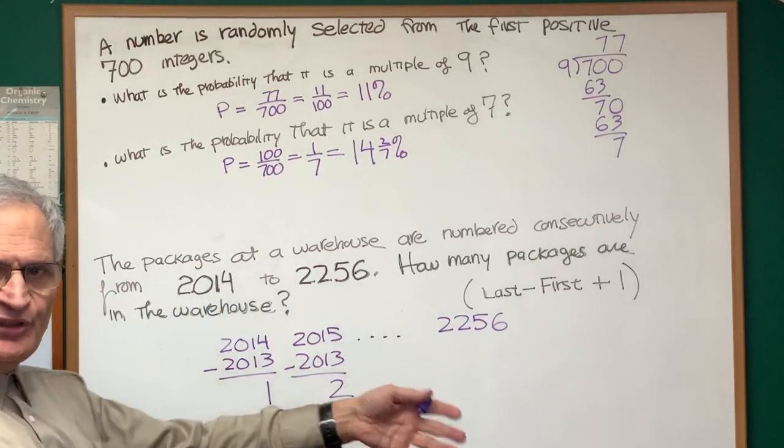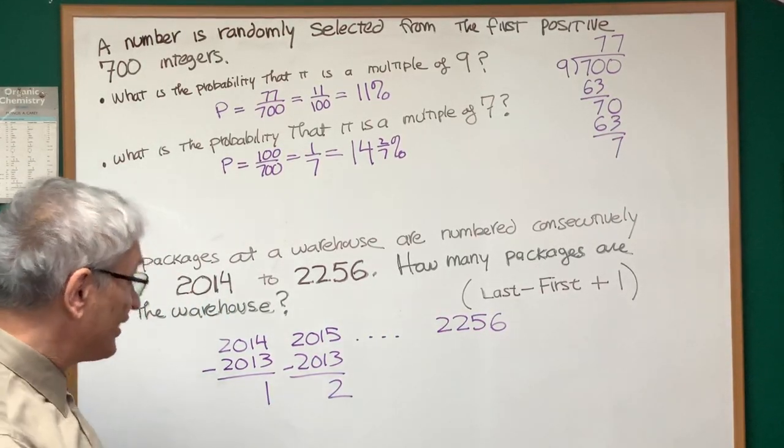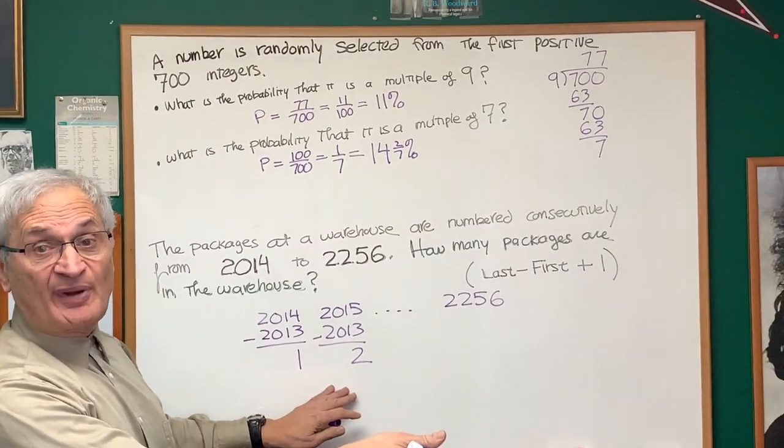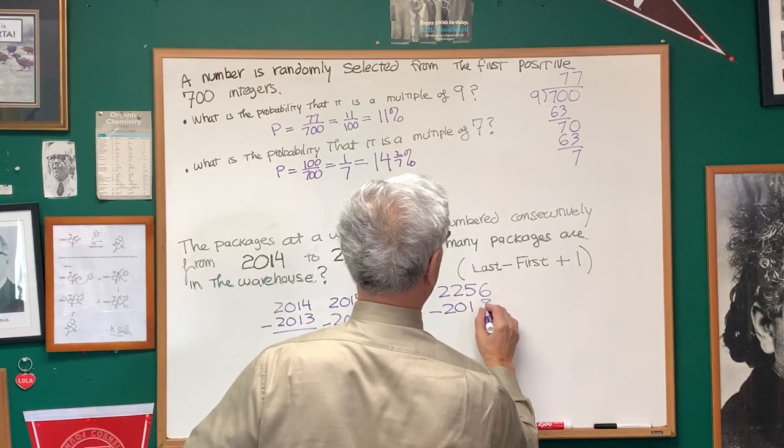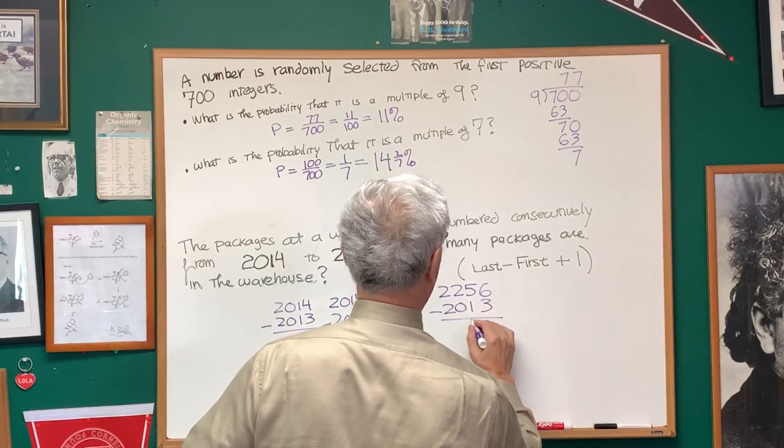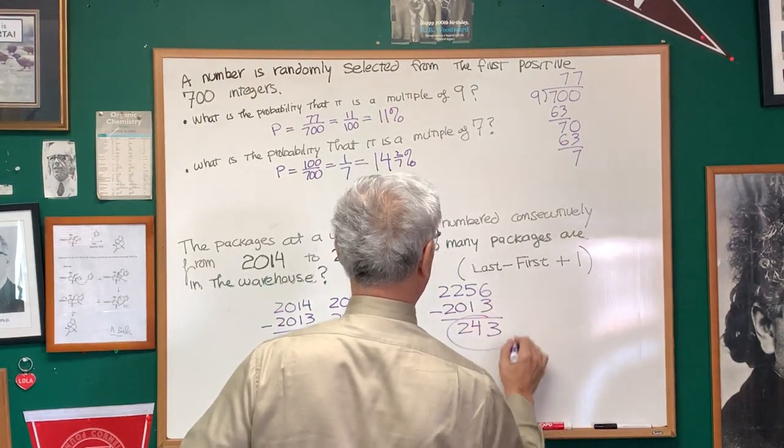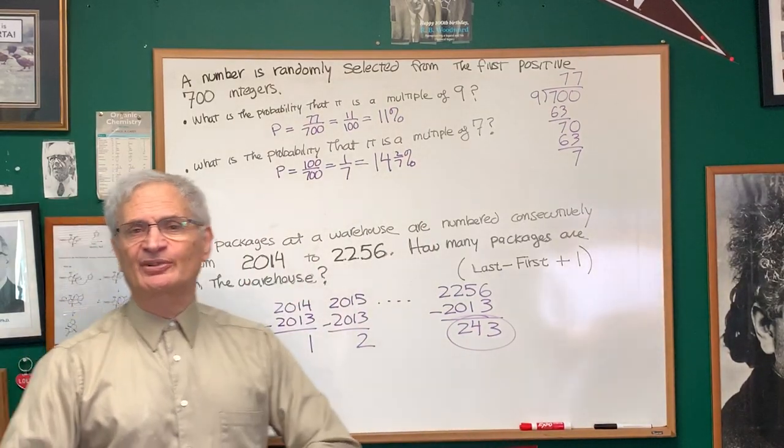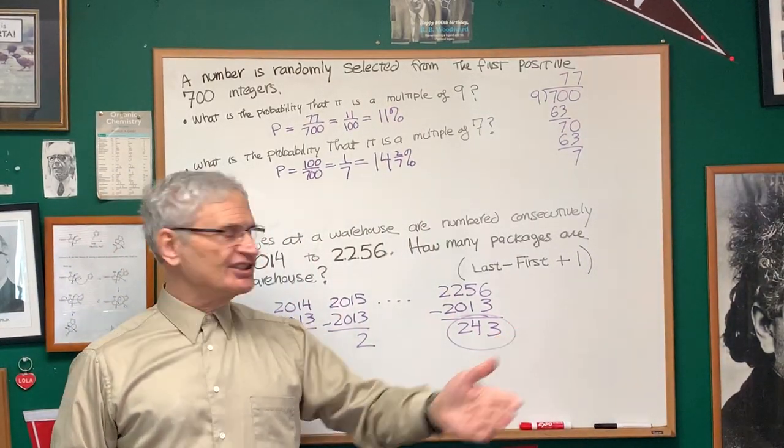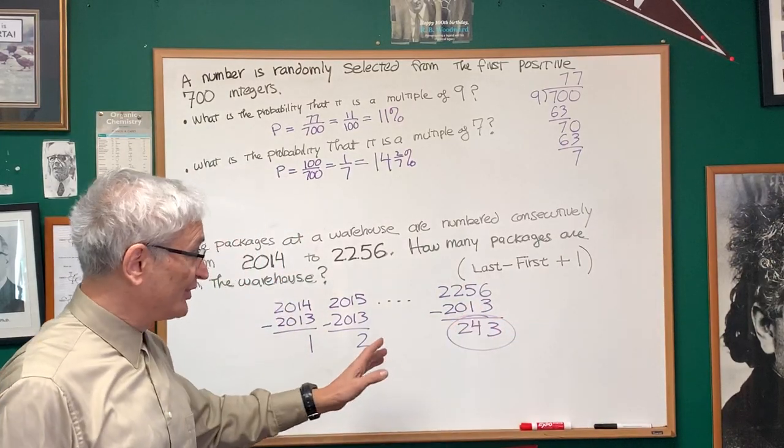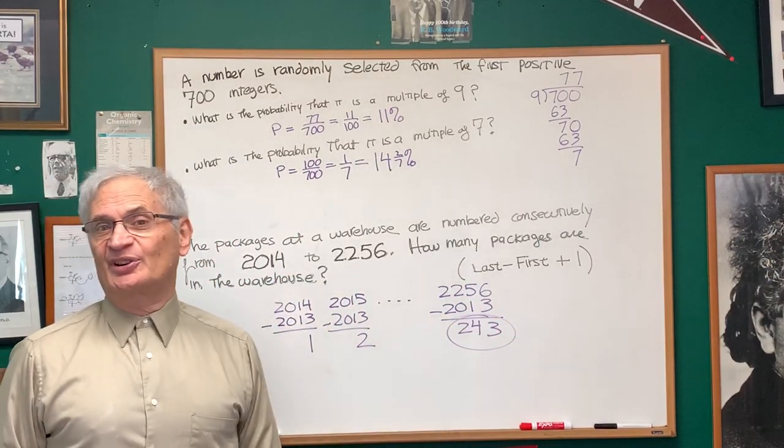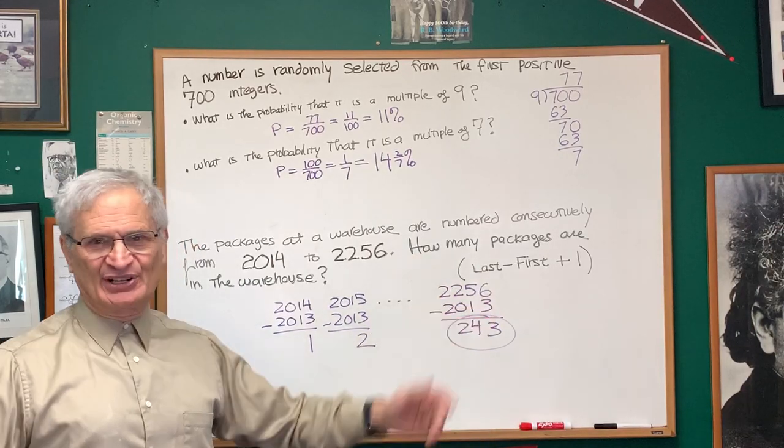I subtract 2013 from each of the sequence of numbers, and I get a correspondence between that and the series of counting numbers. So I'll subtract 2013 from the final number and get 243, and that's the number of digits in that sequence. It takes longer to explain than it does to do. If you're doing this on your own, you would know how to do it in a much more efficient way without the explanation.